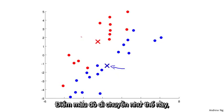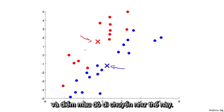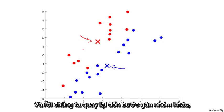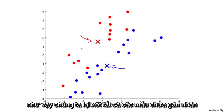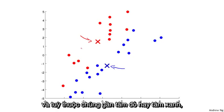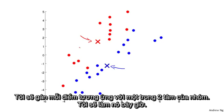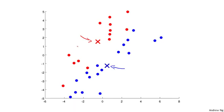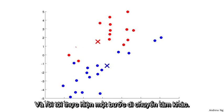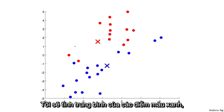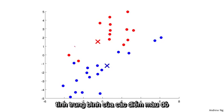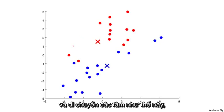The red centroid and the blue centroid move to their new means. Then we go back to another cluster assignment step, where we again look at all the unlabeled examples and depending on whether each is closer to the red or the blue cluster centroid, we color them either red or blue, assigning each point to one of the two cluster centroids. The colors of some points change, and then we do another move centroid step — computing the average of all the blue points and the average of all the red points and moving the cluster centroids accordingly.